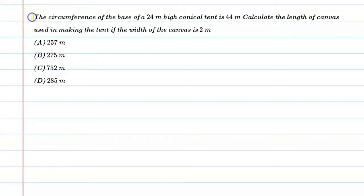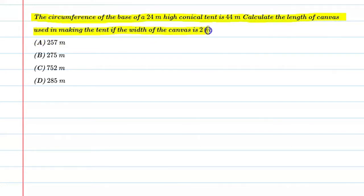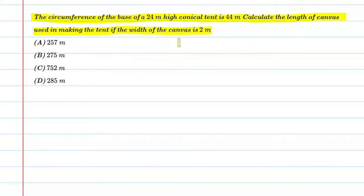Hello students, let's solve this question. The circumference of the base of a 24-meter high conical tent is 44 meters. Calculate the length of canvas used in making the tent if the width of the canvas is 2 meters.